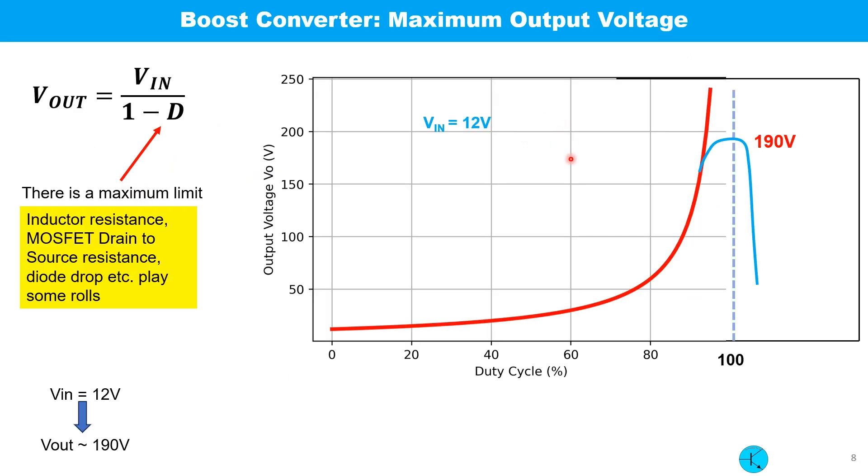This slide shows the plot of output voltage against the duty cycle D. The equation tells us that if D approaches 1, we can get thousands of volts at the output. But in fact there is a maximum limit due to various practical effects. The inductor resistance, MOSFET drain to source resistance, diode voltage drop play important roles as limiting factors. In practice, close to 100% duty cycle, the output voltage first levels off and then starts to decrease. In my case I found the maximum limit was 190 volt for my circuit.